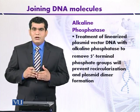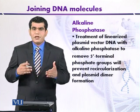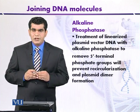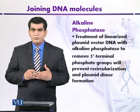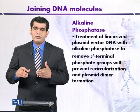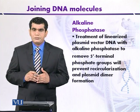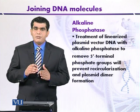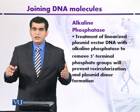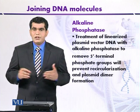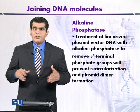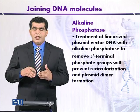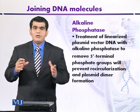Alkaline phosphatase is another tool we can use to overcome this problem — that is, recircularization of the vector DNA. Alkaline phosphatase is an enzyme that can remove the 5' phosphate group from the target DNA. When vector DNA is incubated with alkaline phosphatase, its 5' end will be removed. If the 5' end is not available, even if sticky ends are present, the vector DNA will not recircularize or ligate, and even one plasmid cannot ligate with another digested plasmid. So dimer formation is also prevented.